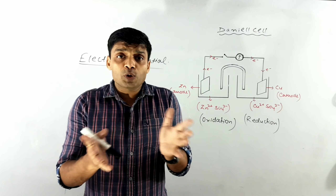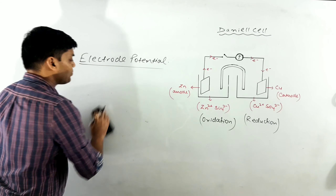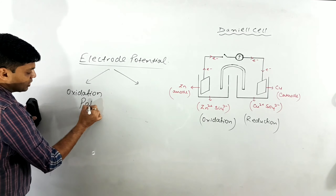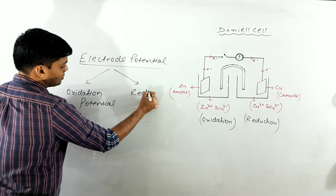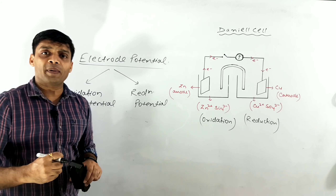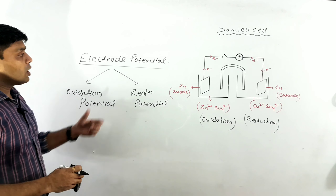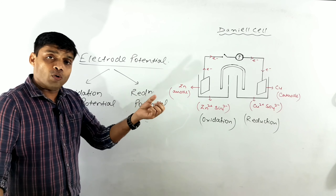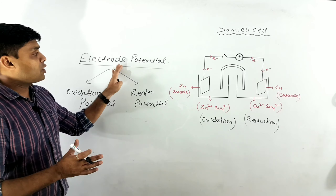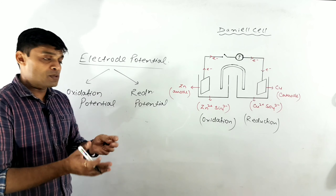So remember, students: whenever any metal is brought in contact with its own ionic solution, it will exhibit one of two tendencies — either the tendency to lose electrons, or the tendency to gain electrons. The tendency of an electrode to either lose or gain electrons is called the potential of that electrode. In very simple terms: electrode potential is just the tendency, the ability, of an electrode to either lose or gain electrons.